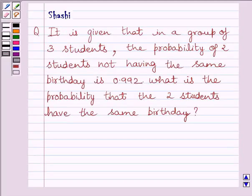Hello and welcome to the session. Let us discuss the following question. It is given that in a group of three students, the probability of two students not having the same birthday is 0.992. What is the probability that the two students have the same birthday?